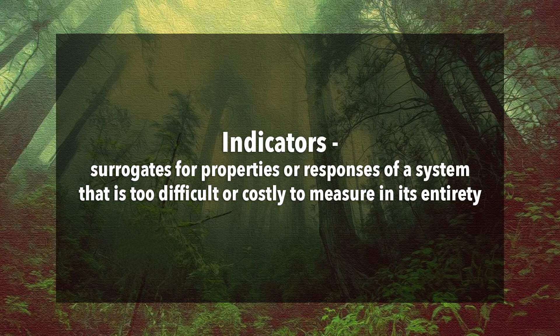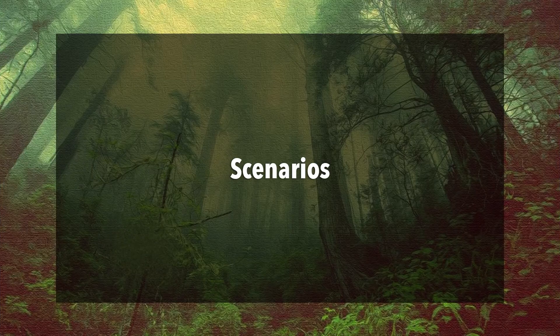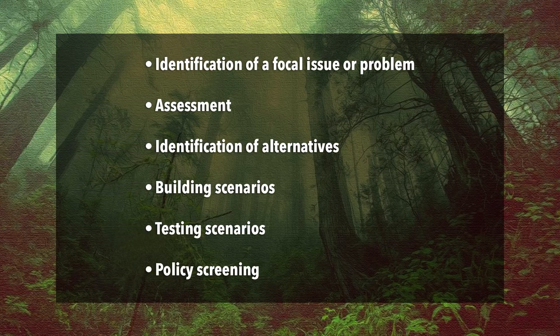Indicators are surrogates for properties or responses of a system that is too difficult or costly to measure in its entirety. Indicators can be derived from measurements of ecological features either by field survey or by using remote sensing data. Conservation actions are generally based upon some expectation about what might happen in the future. Peterson in 2003 described scenario planning as consisting of six interacting stages: (1) identification of a focal issue or problem, (2) assessment, (3) identification of alternatives, (4) building scenarios, (5) testing scenarios, and (6) policy screening.